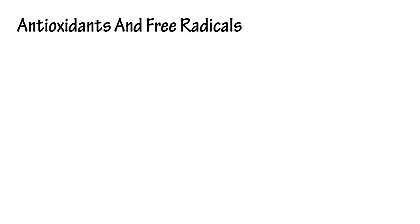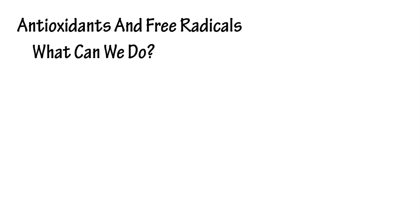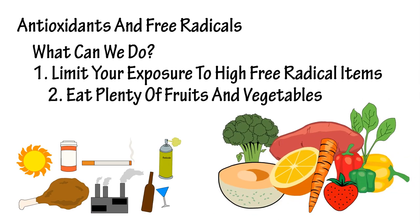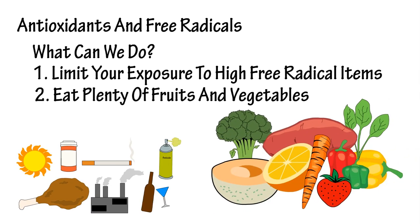So what can we do in the free radical antioxidant battle? Ultimately, there are two things we can do to help our bodies. Number one is to limit your exposure to high free radical items — for instance, eliminating or eating less fried foods. Number two is to make sure that you're eating plenty of fruits and vegetables. You want to consume a wide variety, and organic if possible.